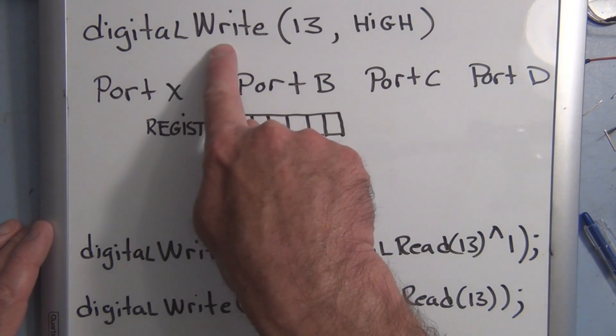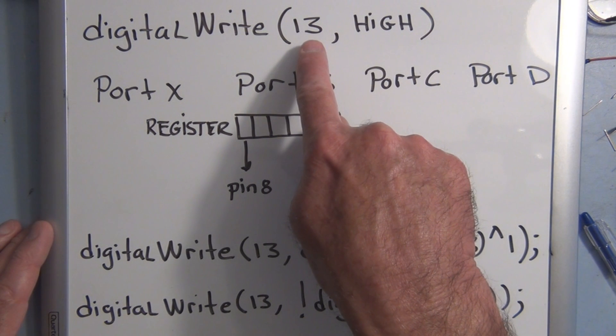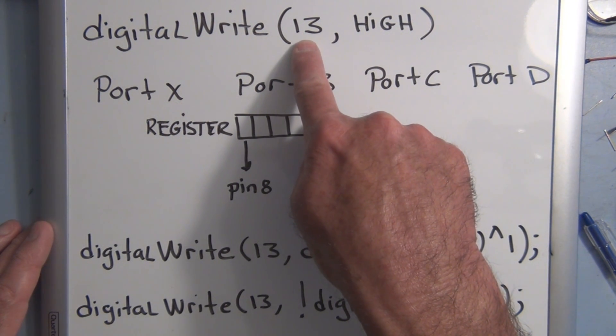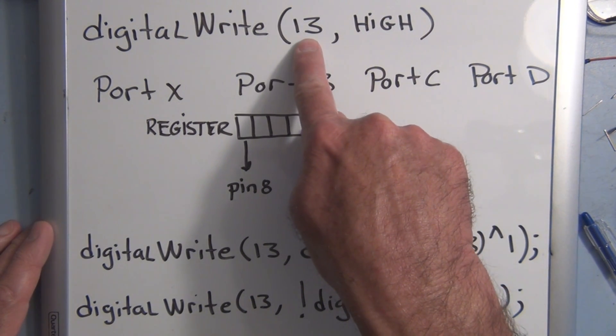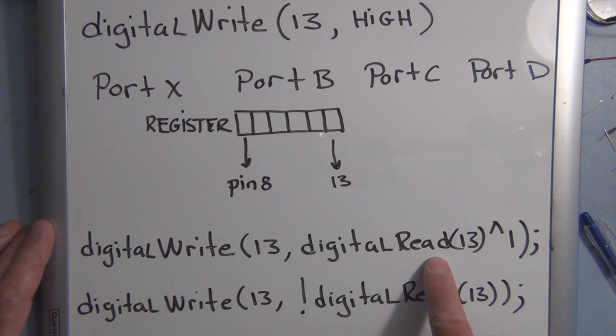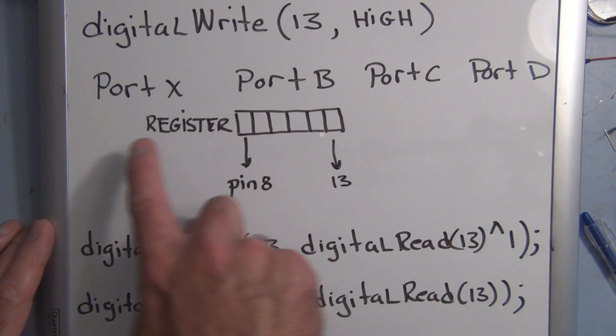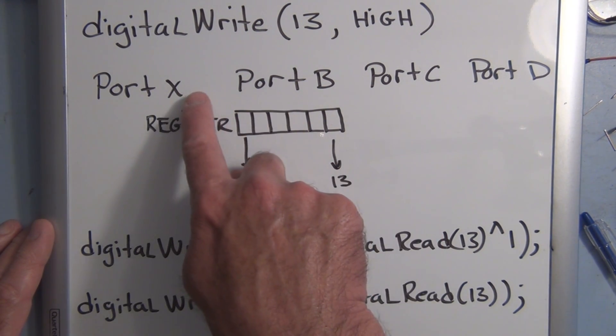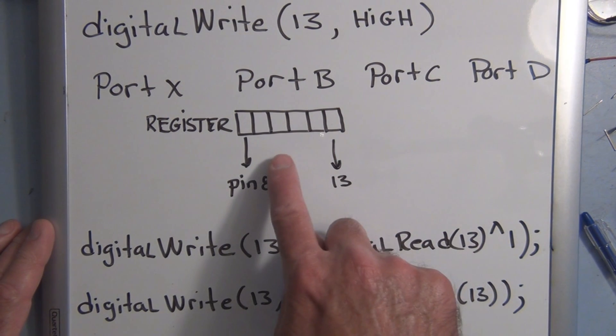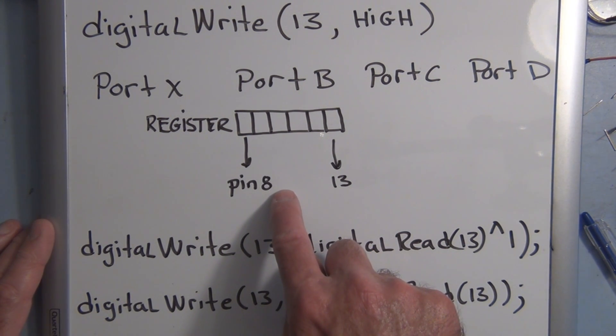To summarize, we'd ordinarily say digitalWrite 13 HIGH, and this would cause 13 to go high, or we could have a constant name here where we would declare 13 a name and also use pinMode to say it's an output. But here we're just saying pin 13 go high, and we're using digitalWrite. But we can use a digitalRead, and when you use a digitalRead on an output, there are registers that are called ports. There's Port X, and X is just—you can substitute Port B, C, and D for Port X. Each of these ports is a register where each of the bits in the register directly maps or connects to one of the pins on the output of the Arduino.